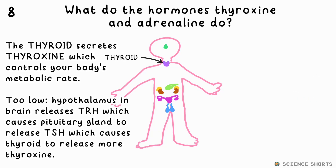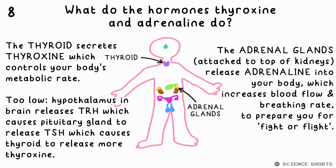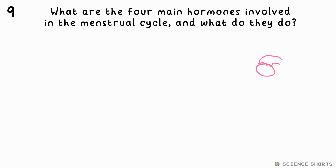Thyroxin controls your metabolic rate. It's secreted by your thyroid, which is controlled by the hormones TRH and TSH, made by the hypothalamus and pituitary glands in your brain respectively. Adrenaline, made by the adrenal glands atop your kidneys, increases your blood flow and breathing rate.